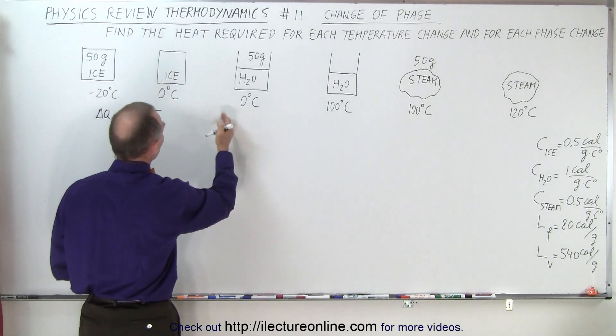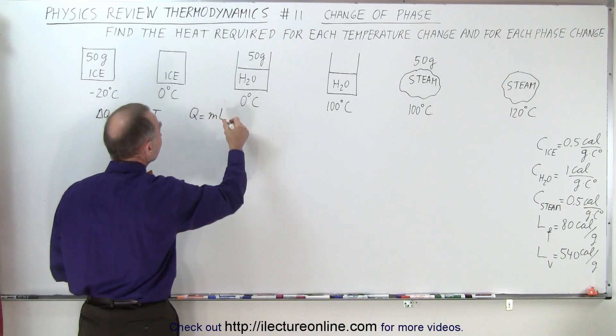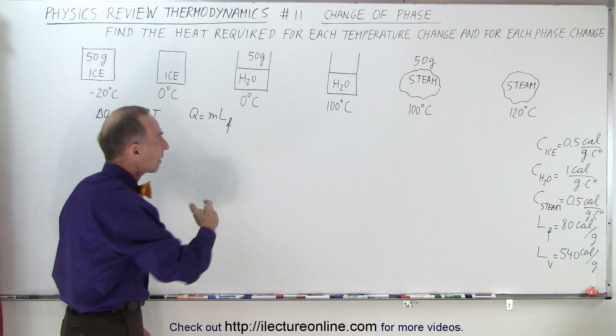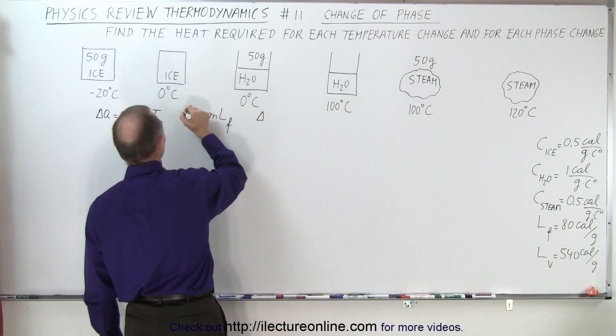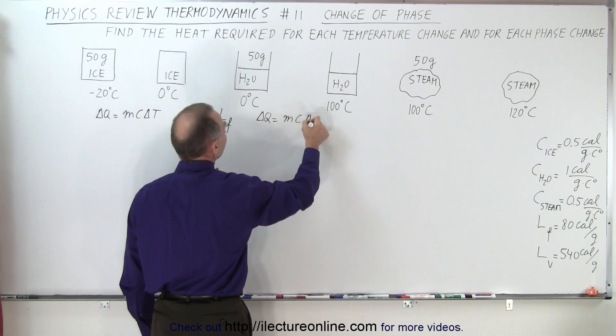If there's a phase change, then the Q is equal to the mass times the latent heat, and in this case it's the latent heat of fusion when we go from ice to water or water to ice. Here we have a temperature change, so we say that delta Q is equal to M C delta T.